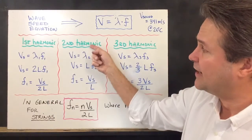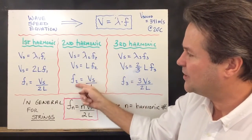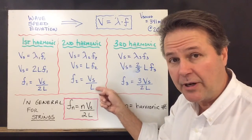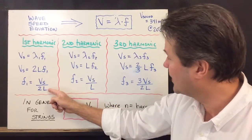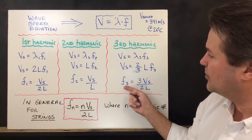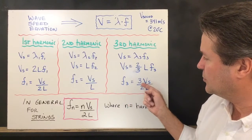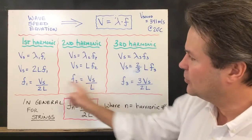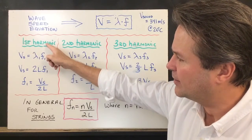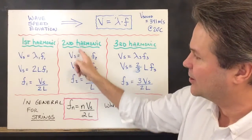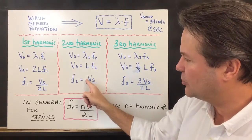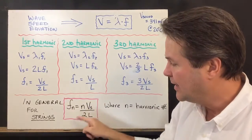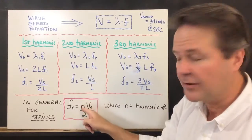For the second harmonic, the frequency equals the speed of sound divided by the length of the string. For the third harmonic, the frequency equals three-halves times the speed of sound divided by L. Notice that if we multiply the first harmonic formula by 1, the second by 2, and the third by 3, we can derive a general formula that includes the harmonic number.